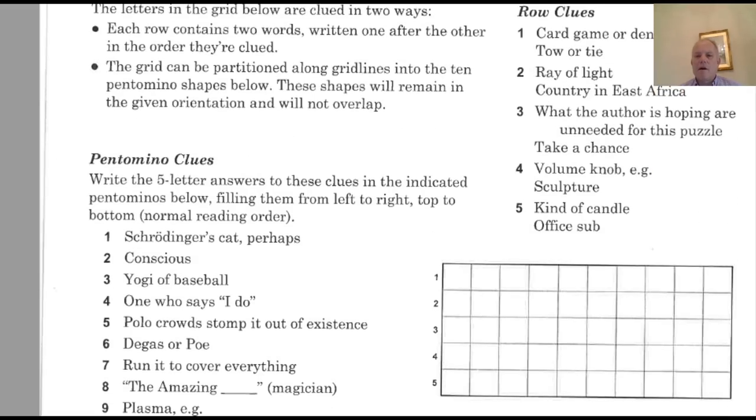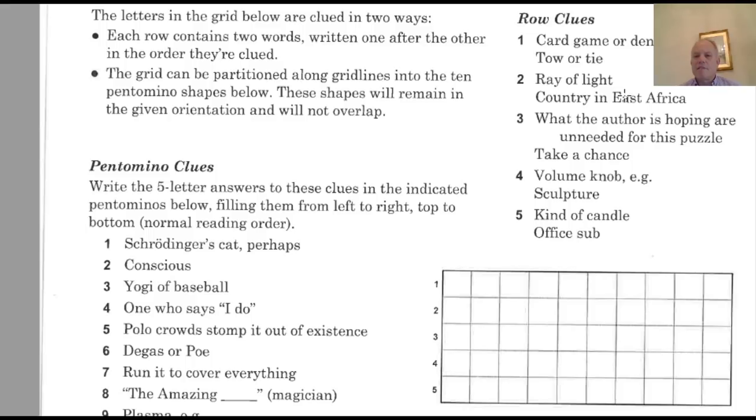Card game or dentistry term. Well done if your kind of Venn diagram of those two possibilities gives you bridge, which is a very clear example of both. Toe or tie? Not very sure. Ray of light? Could well be a beam. Country in East Africa? There's quite a lot. It's got to be no more than six letters, but Kenya, Malawi, at least possible. Might be others.